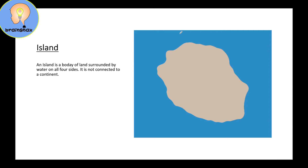This is an island. An island is a body of land surrounded by water on all four sides: water on the first side, water on the second side, water on the third side, and water on the fourth side. The land is in the middle, and it is not connected to a continent — it is not touching a continent.